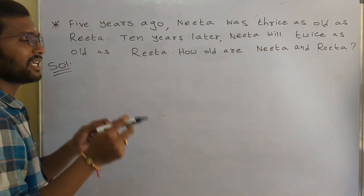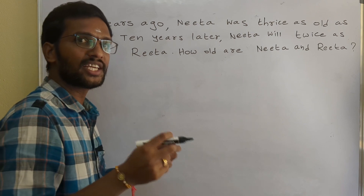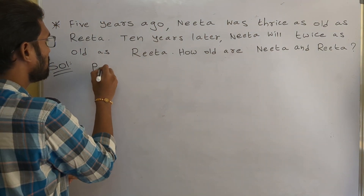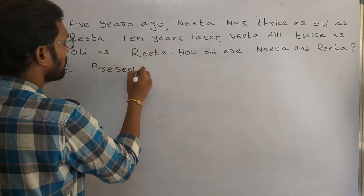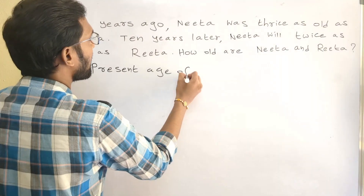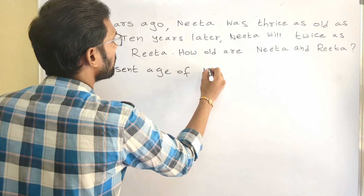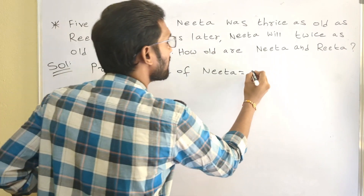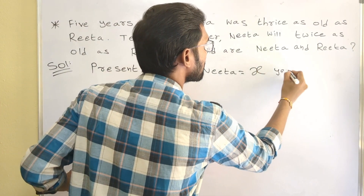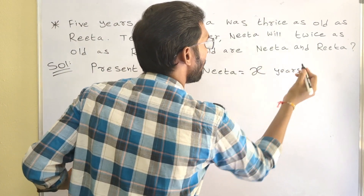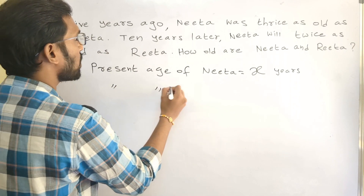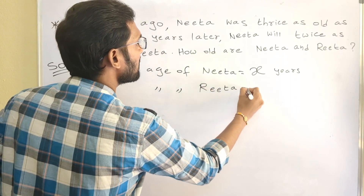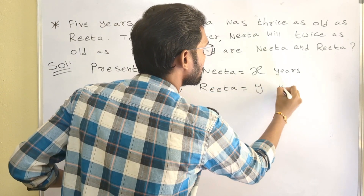First, let us take the present ages of Nita and Rita as variables. Present age of Nita I am going with variable X years. Then present age of Rita I am taking as another variable Y years.